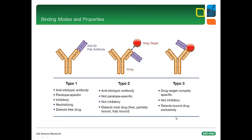Depending on the binding mode, we distinguish three types of drug-specific antibodies, which are shown on this slide. The classical anti-idiotypic antibody, here shown as an FEB fragment, binds to the paratope of the drug antibody. Since it competes with the drug target binding site, it is inhibitory. It can be used to detect free drug in serum, i.e. drug that is not bound to the target antigen. We have named this type 1.